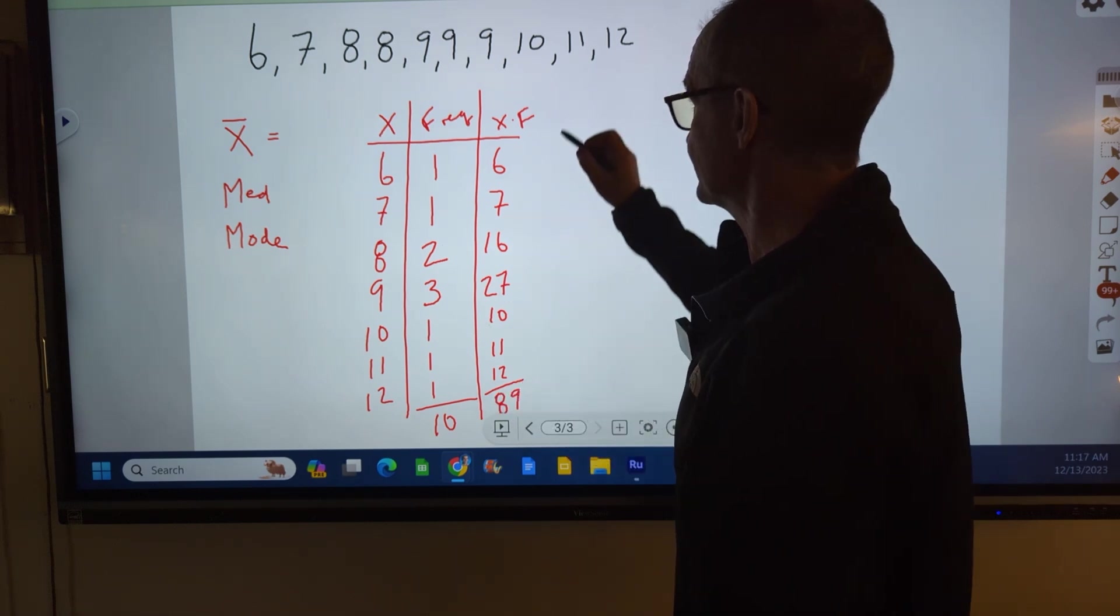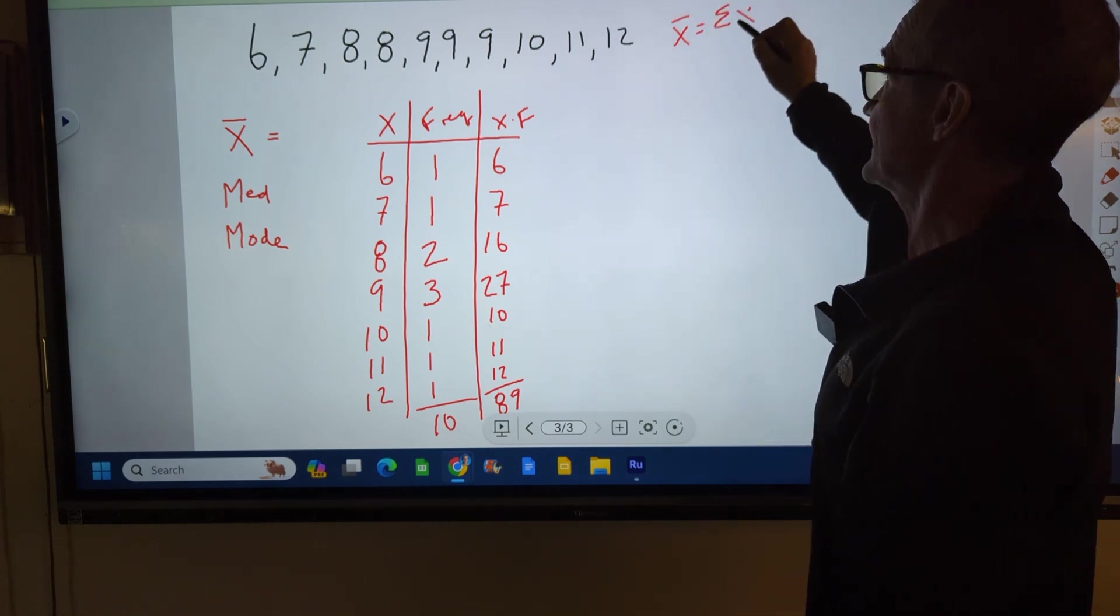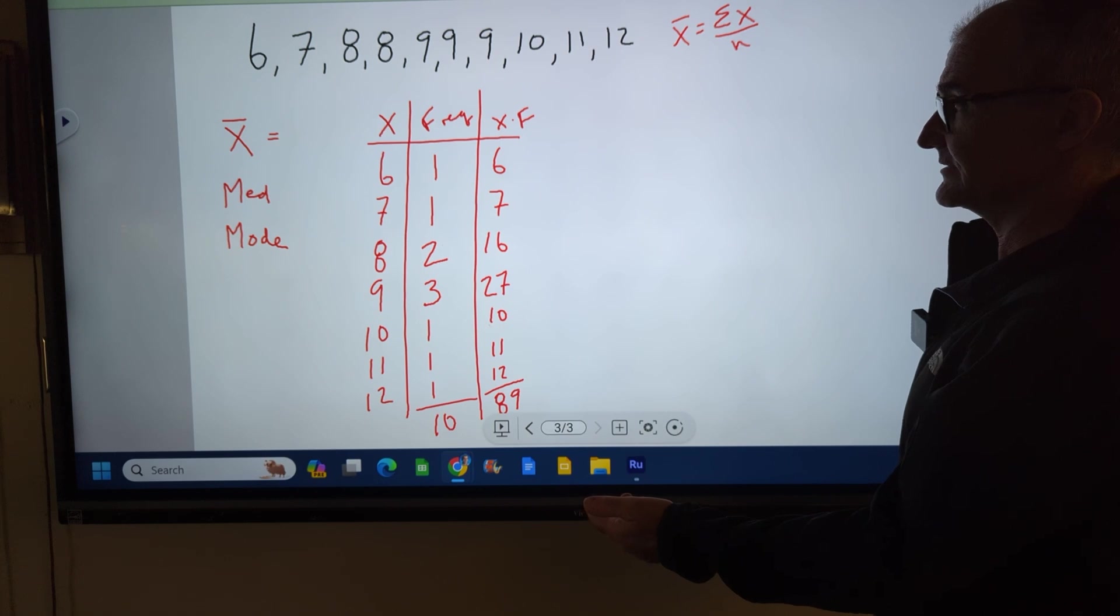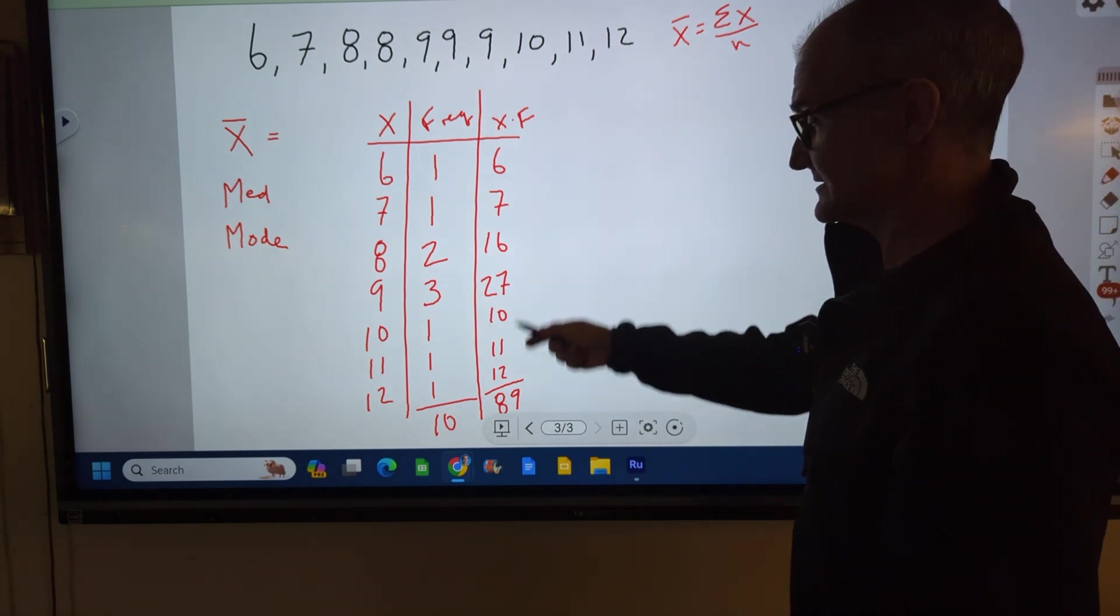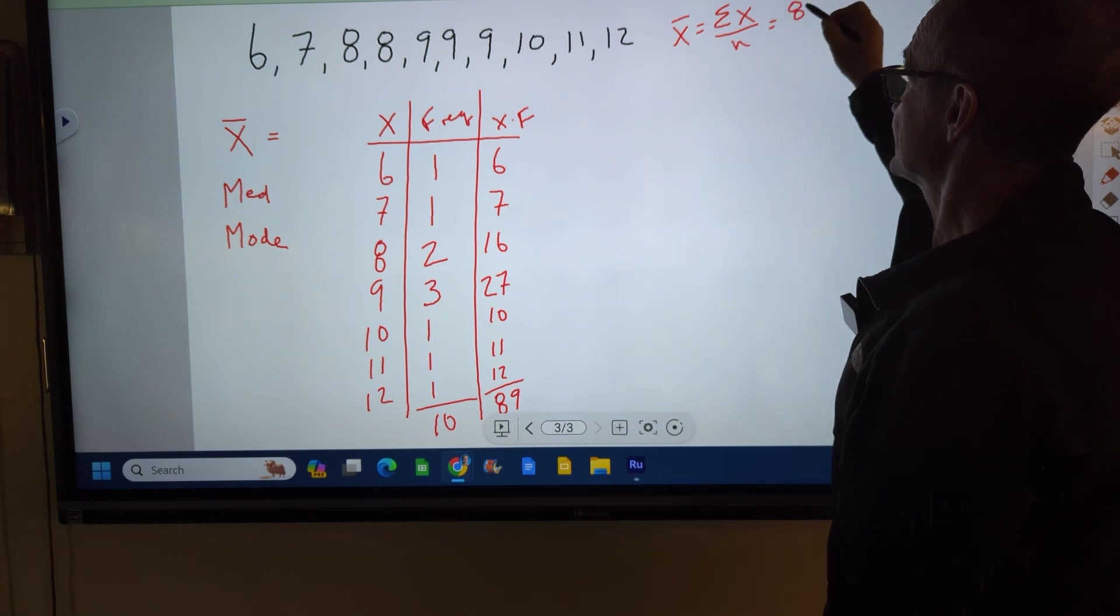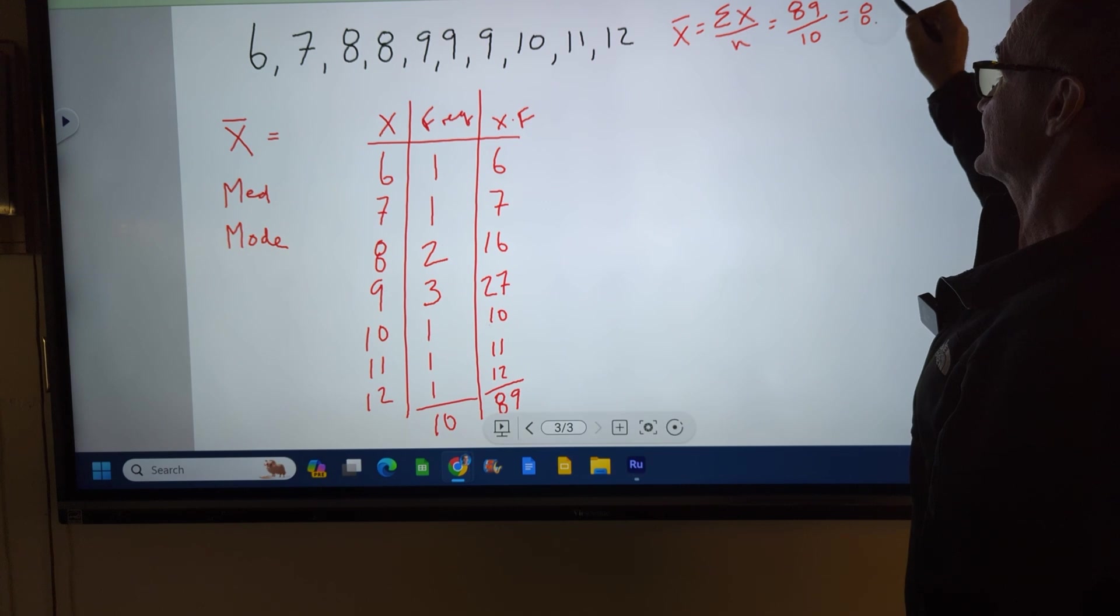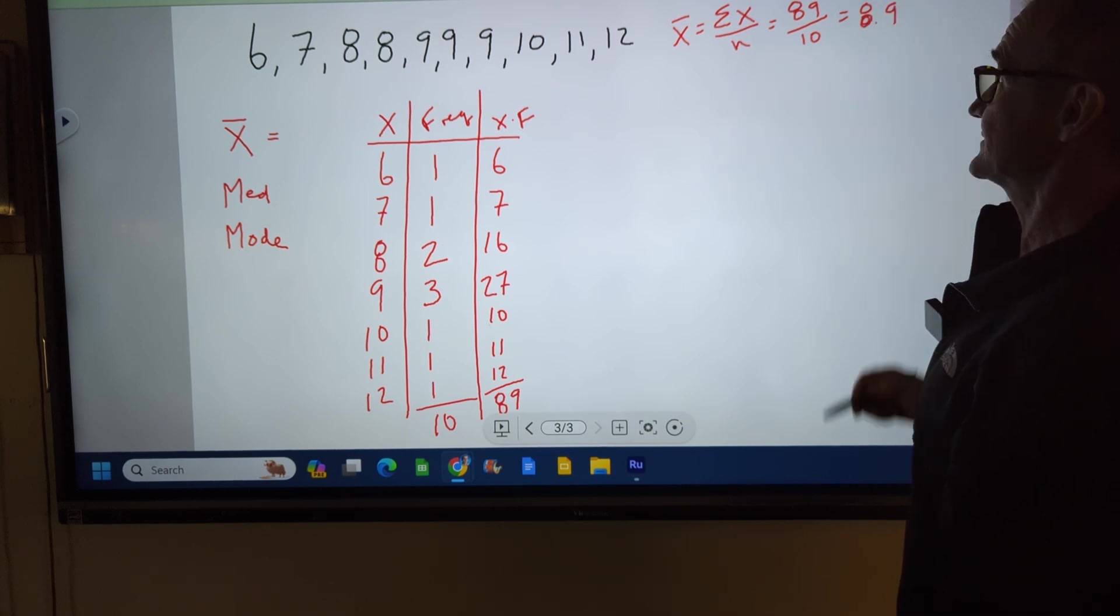So x̄, the mean, is going to be the sum of all my x values divided by n, the number of values. So my average is the sum of all 10 of those values, 89, divided by the number of values, 10, and I get an average of 8.9.